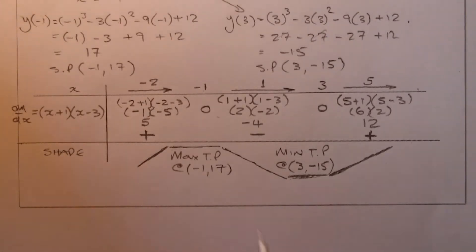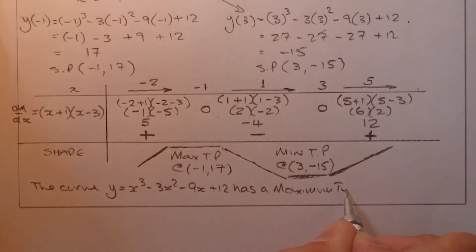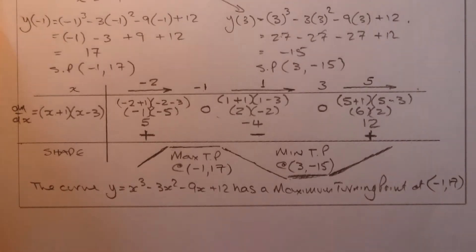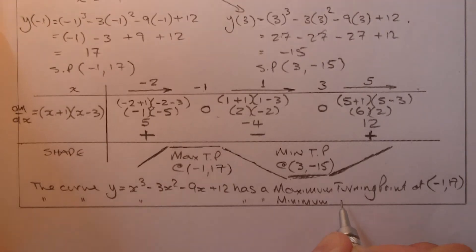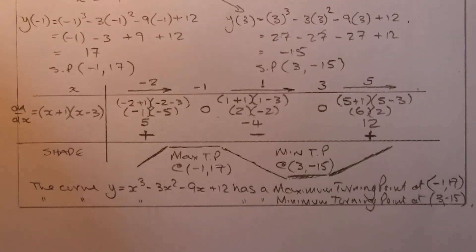To finish, I'll write a statement: the curve y equals x cubed minus 3x squared minus 9x plus 12 has a maximum turning point at (minus 1, 17) and a minimum turning point at (3, minus 15). This type of question is very common in your exams, prelims, or any tests, so make sure you're able to complete it. Hope you've learned from this one — good luck.